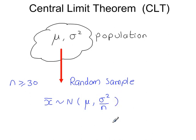So in short, the Central Limit Theorem states that if you take a large random sample from a population whose distribution is unknown, the sample mean follows a normal distribution with these parameters.